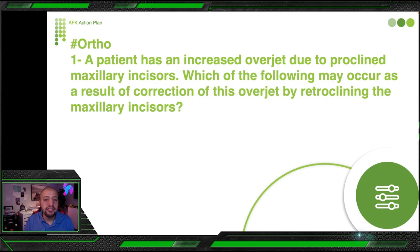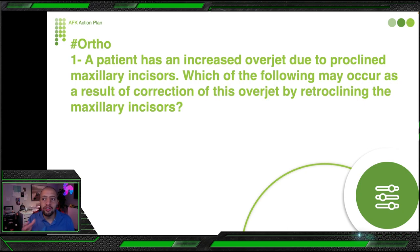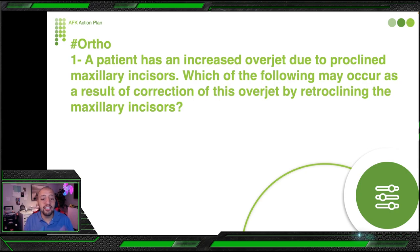First question: a patient has an increased overjet due to proclined maxillary incisors. Which of the following may occur as a result of correction of this overjet by retroclining the maxillary incisors? If you know the definitions, it will be extremely easy to answer. The patient has increased overjet and proclined incisors, and we are going to retrocline them — so what is going to happen?